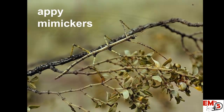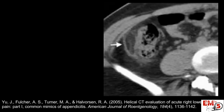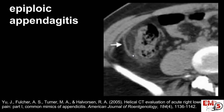Let's talk about some mimickers of appendicitis — basically patients coming in with right lower quadrant pain. So in your differential of right lower quadrant pain, here are some other things to consider. We have this finding: our patient has right lower quadrant pain, and scanning through we see what looks like an appendix. This is actually epiploic appendagitis — it's rather rare, but if you get a read back on the scan, I want you to go back and try to find it. This isn't something we'll necessarily diagnose as emergency physicians, but if your radiologist diagnoses it, you can look for it.